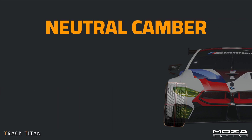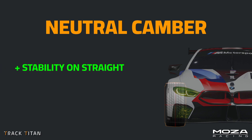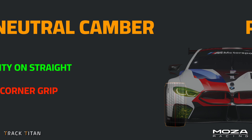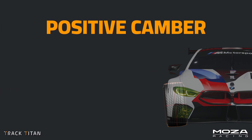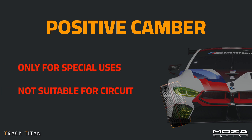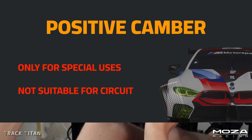Neutral camber is where the wheels sit perpendicular to the road, which offers increased stability on the straight but limits corner grip due to the deflection we spoke about before. Technically there is also positive camber, but this is only used in special circumstances — if you tried it on a race circuit you'd see a gravel trap more often than the finish line.